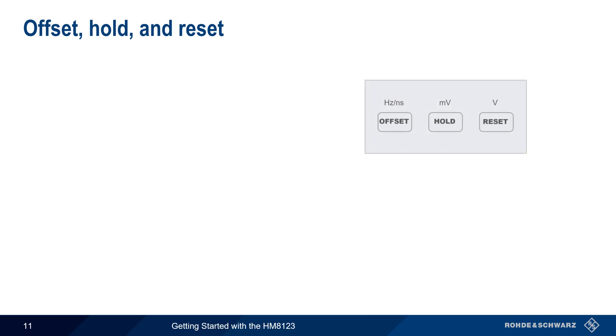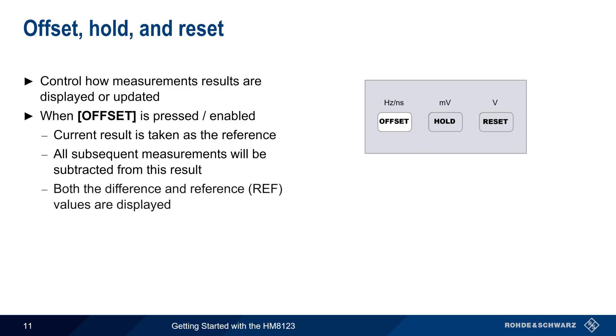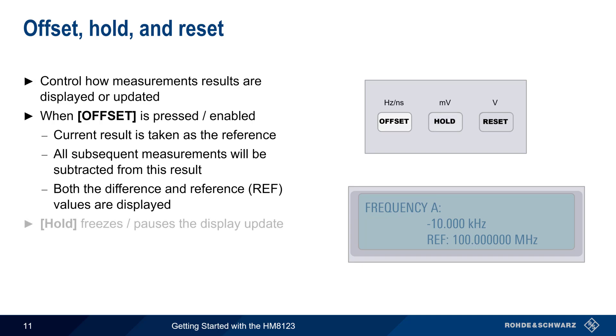The offset, hold, and reset keys control how measurement results are displayed or updated. Pressing the offset key causes the currently measured result to be taken as a reference, and all subsequent measurements will be subtracted from this result. In this case, both the difference as well as the reference values are displayed. The hold key freezes or pauses the update of displayed values. And the reset key clears and restarts the total count measurements that we looked at earlier.